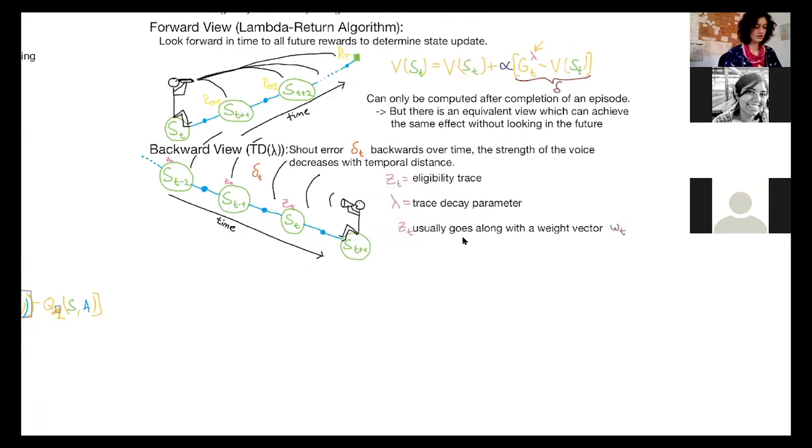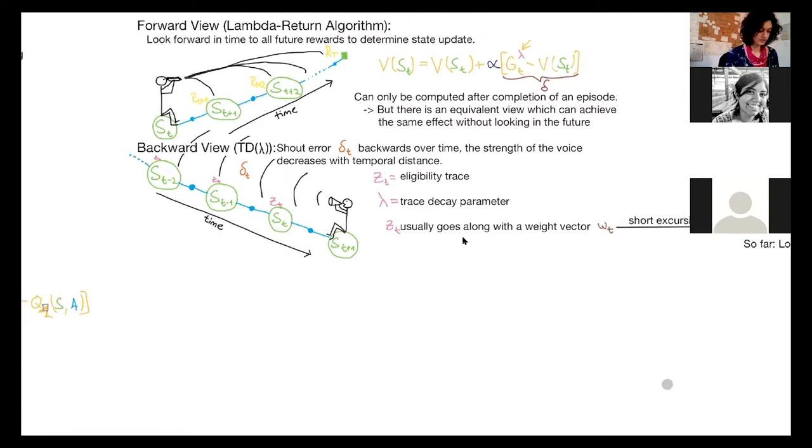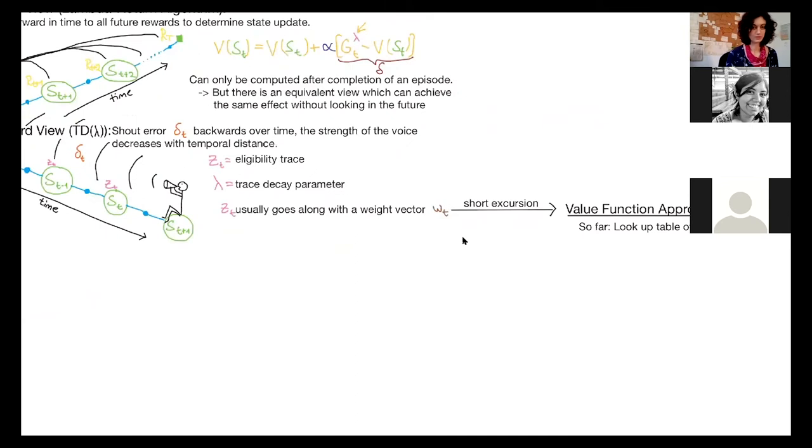And to do this, we introduce a new vector called the eligibility trace Z, which goes along a weight vector. And a weight vector for this, we need to have a little short excursion to value function approximation.